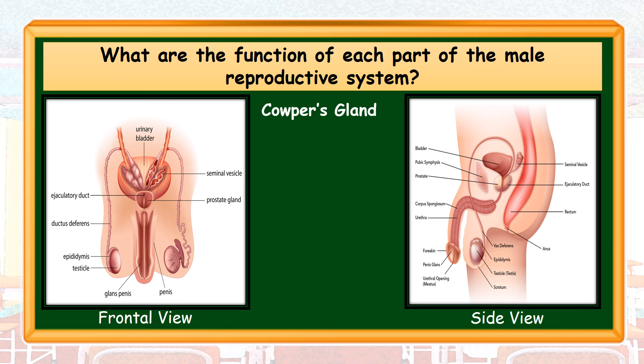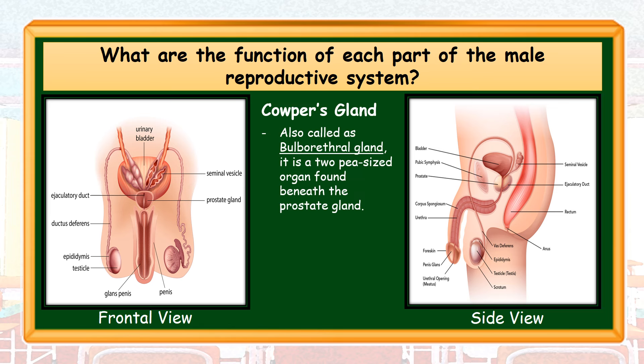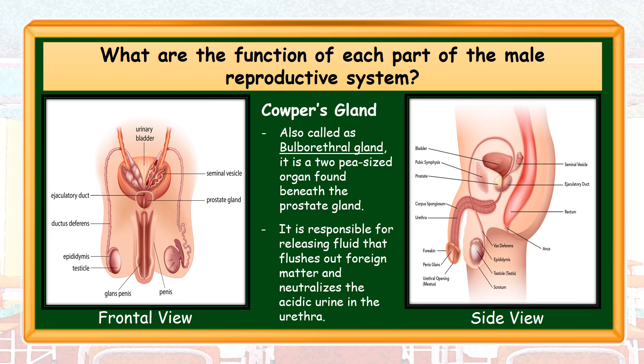Cowper's gland, also called the bulbourethral gland — it is a pea-sized organ found beneath the prostate gland. It is responsible for releasing fluid that flushes out foreign matter and neutralizes the acidic urine in the urethra. Note that in this illustration, the Cowper's gland is not visible since it is found beneath the prostate gland.